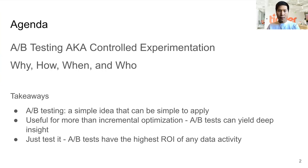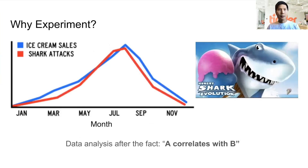Just test it — A/B tests have the highest ROI of any data activity. Why experiment? If you are interested in shark attacks, you'd find that looking at the data over time, shark attacks and ice cream sales tend to happen at the same time. They correlate.